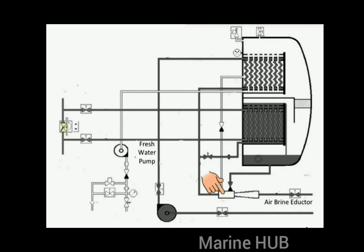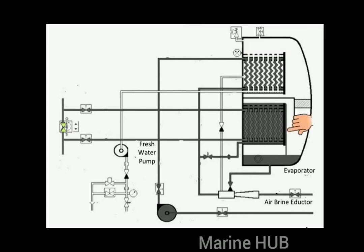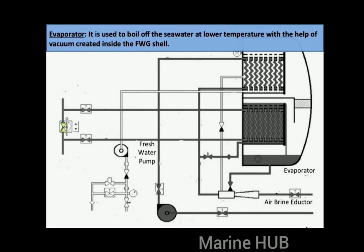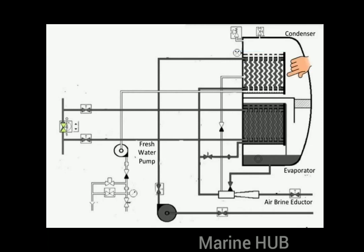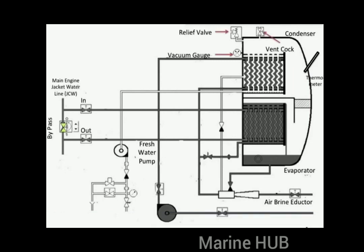The air and brine inductor is used to remove the accumulated brine from the generator and to create the necessary vacuum. The evaporator is used to boil off the seawater at a lower temperature with the help of the vacuum created inside the fresh water generator shell. The condenser condenses the fresh water vapors and collects them in liquid form for further use.